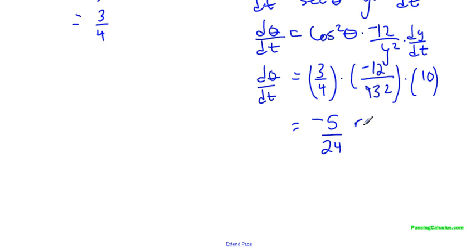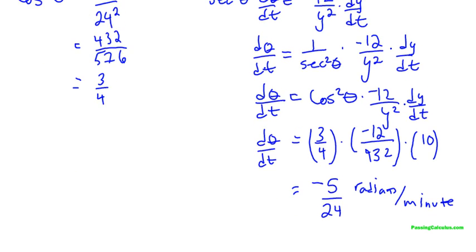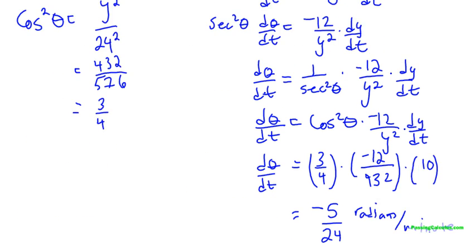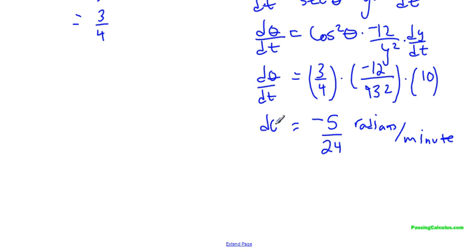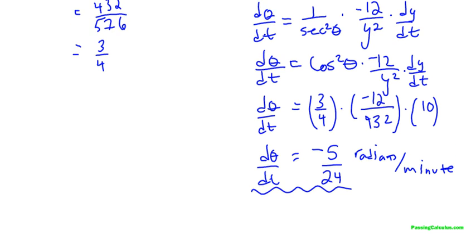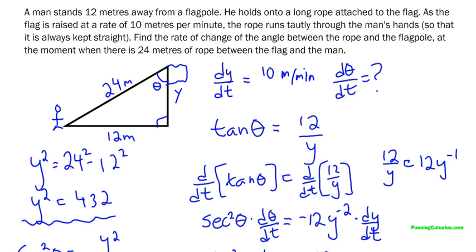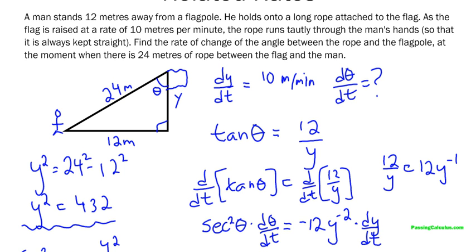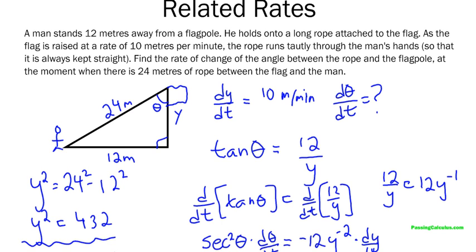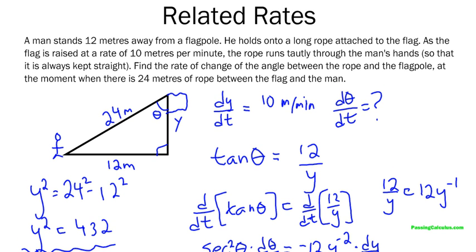So I end up with negative 5 over 24. And I'm going to call this radians per minute. And there's my answer. So the rate of change of that angle is changing negative 5 over 24 radians per minute. So that's my answer. So on a test, I would write a concluding statement saying exactly what I just said a minute ago. The rate of change of the angle between the rope and the flag is increasing, decreasing. It's decreasing at a rate of so and so radians per minute.